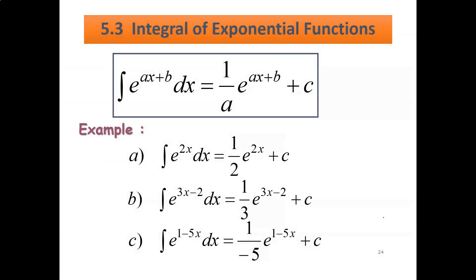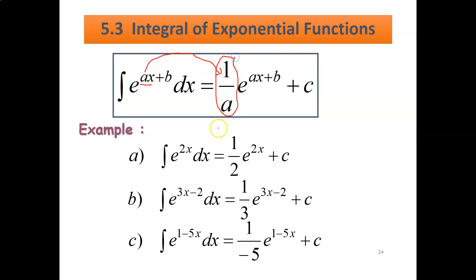Next, we have this rule: integration of e^(ax+b) dx gives you (1/a) times e^(ax+b) plus c. How do we get this? It's because you have ax. When you have ax, this a will become 1 over a. The rest — exponent ax plus b — you just write it back. So you get e^(ax+b) plus c.